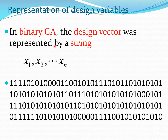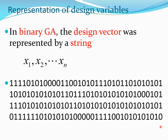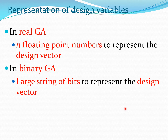To give an example: in binary GA we would represent a design vector x1, x2, ..., xn as a giant string of bits. In real GA, n floating point numbers are used to represent the design vector, whereas in binary GA large strings of bits are used. That is the basic difference between real coded GA and binary coded GA.